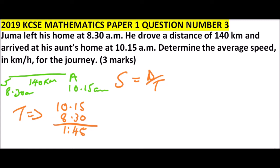So we can write time equals 1 hour and 3 quarter, which is the same as 1.75 hours.